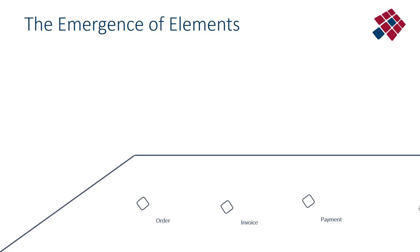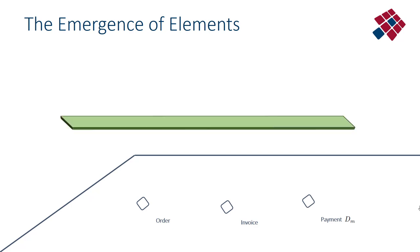In general, you have multiple functional entities and a number of cross-cutting concerns. Suppose you have three functional entities — order, invoice, and payment — and a cross-cutting concern of persistency implemented through a persistency framework. That does not mean you don't have to do anything yourself; you still have to interconnect your functional entities with this framework by adding a couple of lines of code or annotations. These lines of code must be separated into a separate class, well encapsulated, so that future changes of this cross-cutting concern solution will not ripple through the rest of your structure.